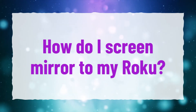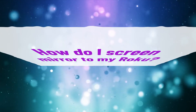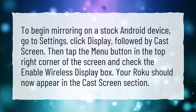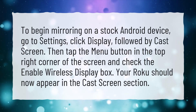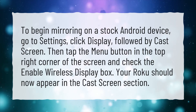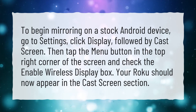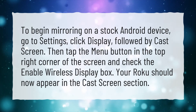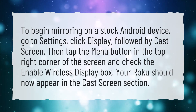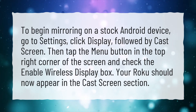How do I screen mirror to my Roku? To begin mirroring on a stock Android device, go to Settings, click Display, followed by Cast Screen. Then tap the Menu button in the top right corner of the screen and check the Enable Wireless Display box. Your Roku should now appear in the Cast Screen section.